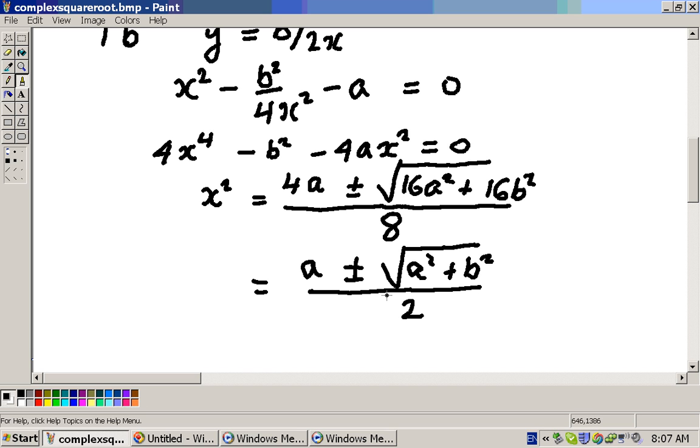Now, if we look at that, which sign do we choose? Well, we've decided that x has to be real, so the right-hand side can't be negative. Well, if we look at the size of these things, then the square root of a² + b² will always be numerically greater than a, whatever it is, so that tells us we have to choose the positive sign. So, we do that, and that's equal to a + √(a² + b²) divided by 2.